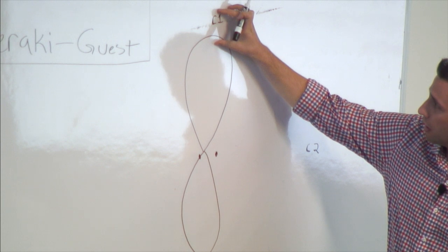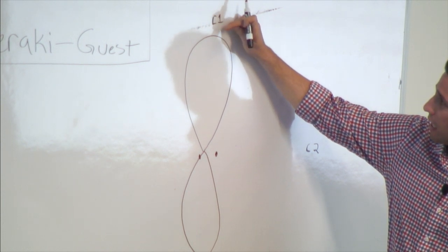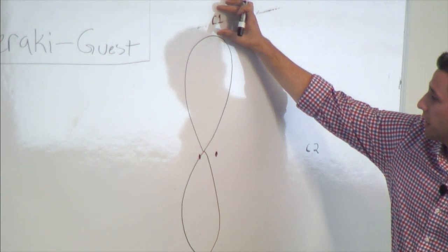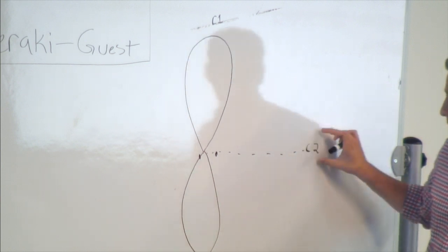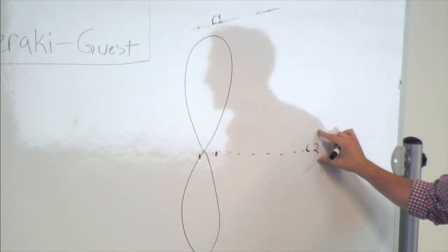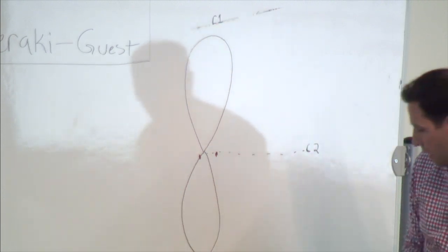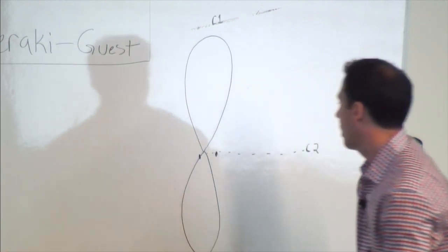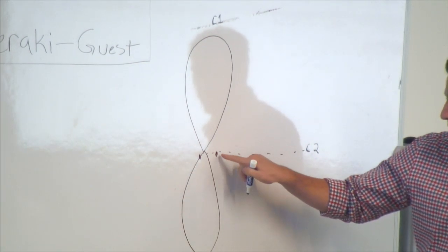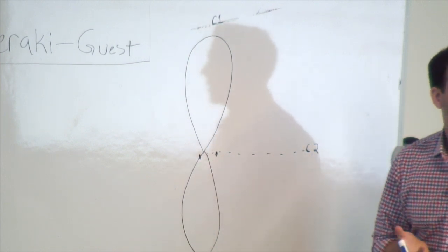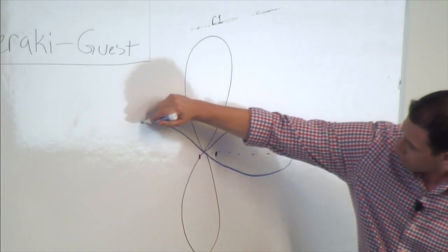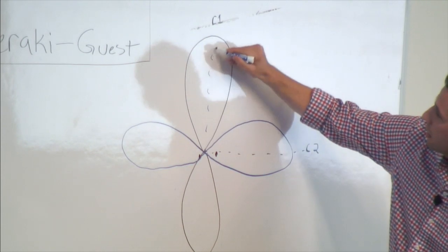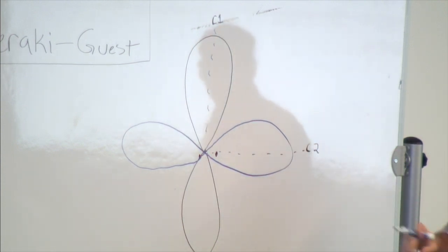This part of the antenna beam pattern has the highest SNR to client one. Over here, the signal strength is actually identically a null — zero percent of that signal is received by client two. It doesn't hear it at all. For client two, you transmit its spatial stream by sending identical signals on both paths, except on one path you add a 180-degree phase delay, which creates a beam pattern aimed at client two, with a null going to client one. That's how you send two spatial streams to two clients simultaneously when they have no ability to suppress interference themselves.